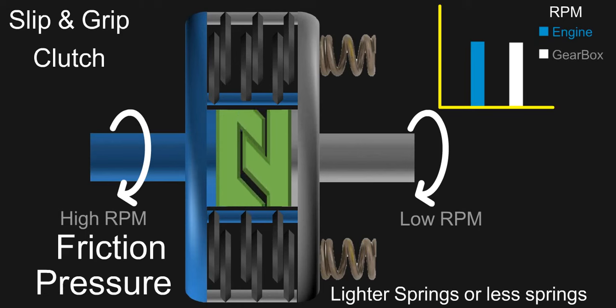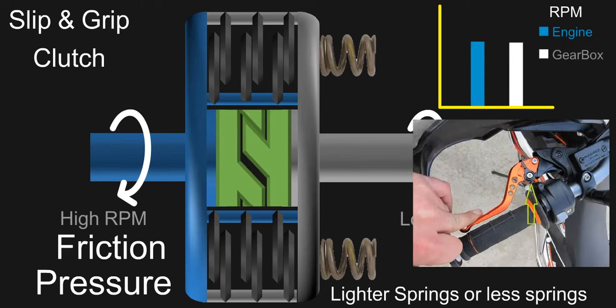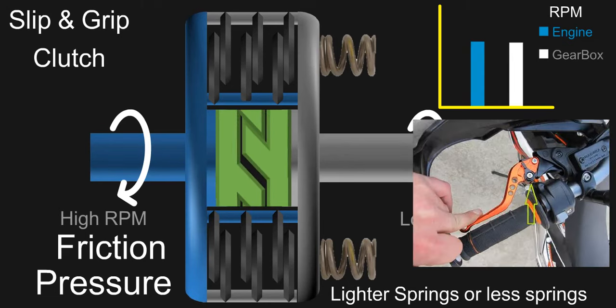As lighter or less number of springs are used here, it is now more easier and lighter to operate the clutch. That's how the assist function or slip and grip function of a modern slipper clutch works.